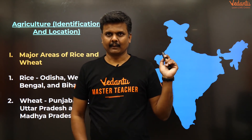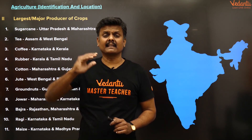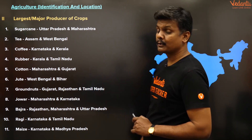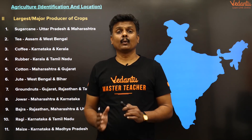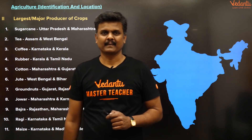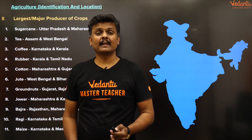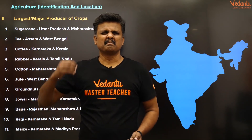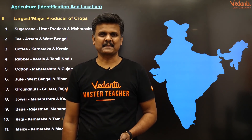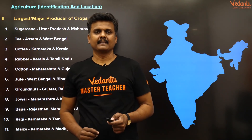Now, which states are the largest producers of which crops? Sugarcane — it's all about Uttar Pradesh and Maharashtra. Tea — Assam and West Bengal. Fun fact: it was the British who really made tea a must-have everyday crop in India. Tea grows in Assam and West Bengal, up towards the northeastern corner of the country.